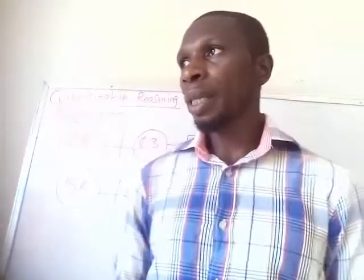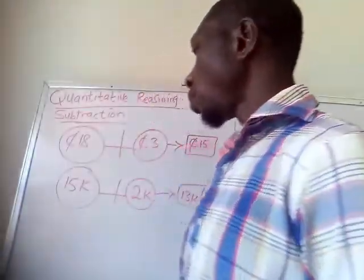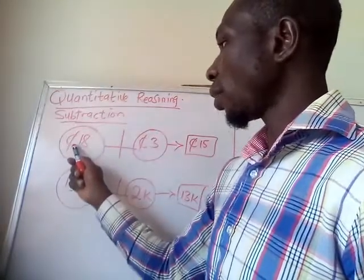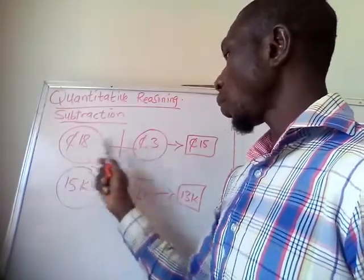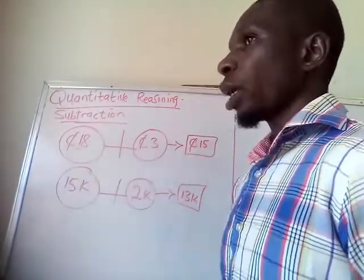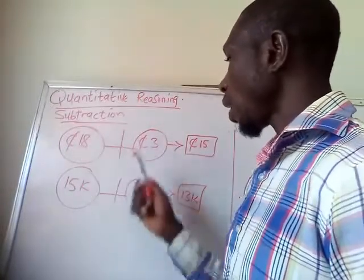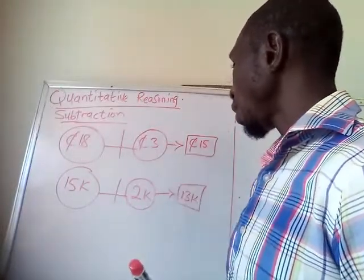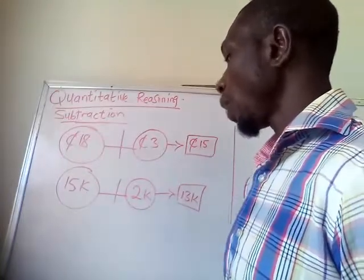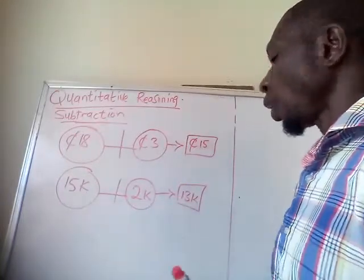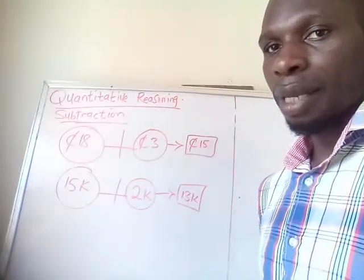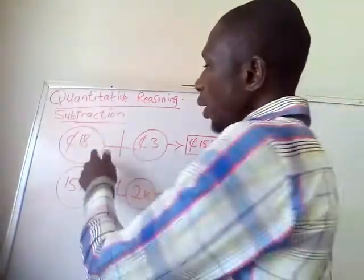Before you do that, I would like you to listen to these explanations. Here we have the first example on the board. This sign is the sign of cent, and we have 18 cent, 3 cent, and 15 cent here; 15 kobo, 2 kobo, and 13 kobo mapped out in these boxes and circles.